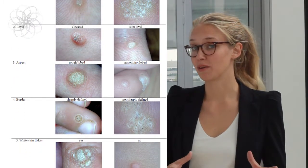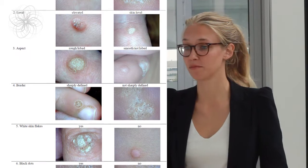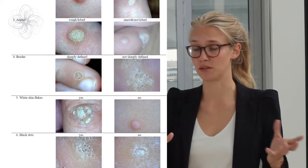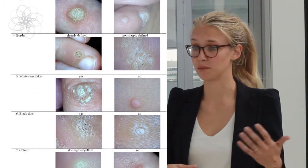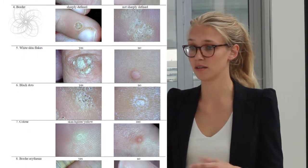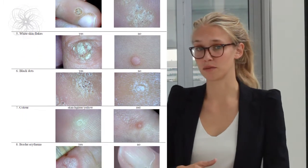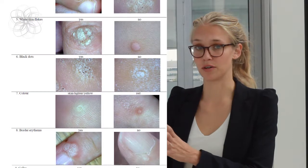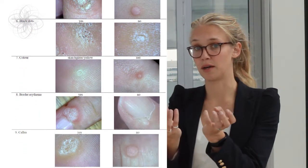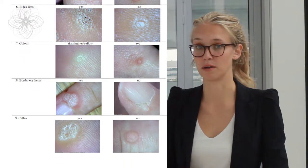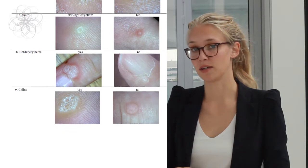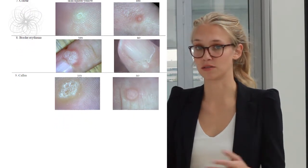Border could be sharply defined or not sharply defined. Presence of white skin flakes was tested — either present or absent. The same applied to black dots — either present or not. Color was scored as red or another color. Border erythema, meaning erythema around the wart, was scored for presence. Finally, callus was scored as either present or absent.